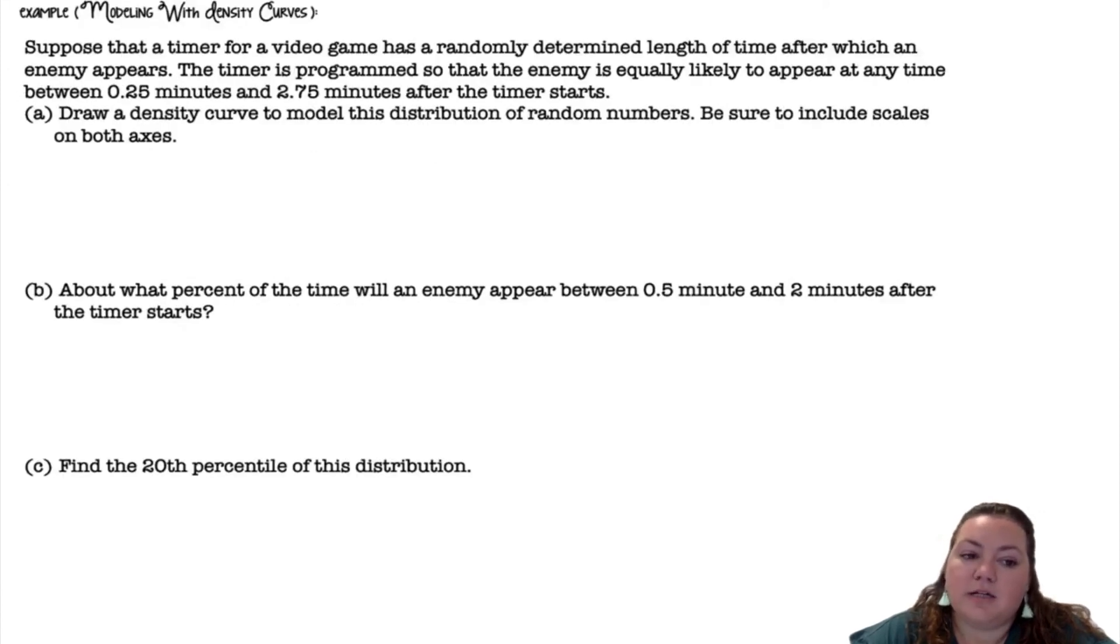Modeling with density curves. Suppose that a timer for a video game has a randomly determined length of time after which an enemy appears. The timer is programmed so that the enemy is equally likely to appear at any time between 0.25 minutes and 2.75 minutes after the timer starts. Draw a density curve to model the distribution of random numbers. Be sure to include scales on both axes.